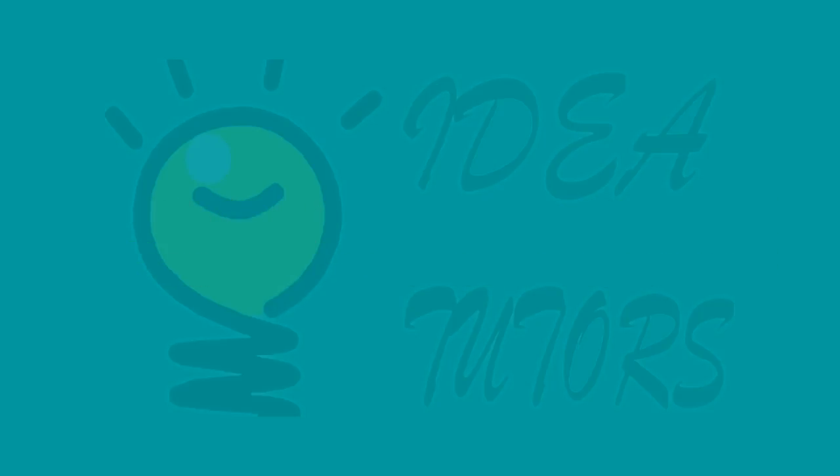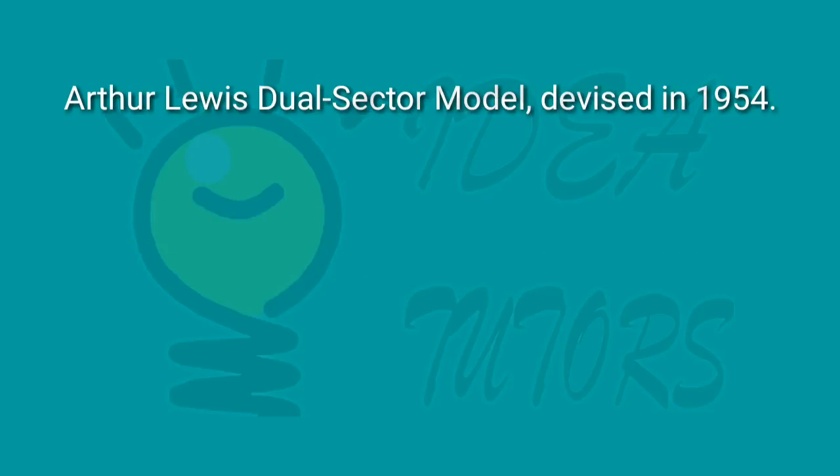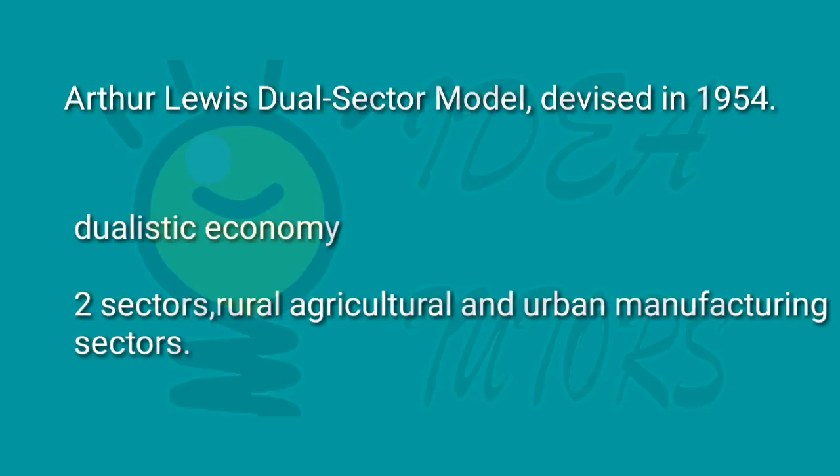In this lesson we will learn about Arthur Lewis's dual sector model. Devised in 1954, Arthur Lewis put forward a development model of a dualistic economy consisting of rural agricultural and urban manufacturing sectors.